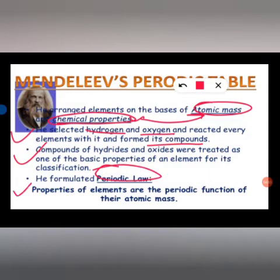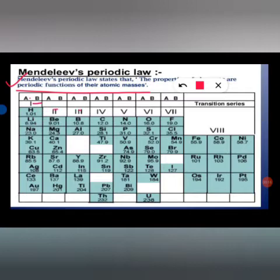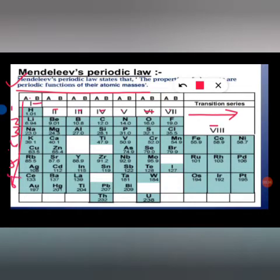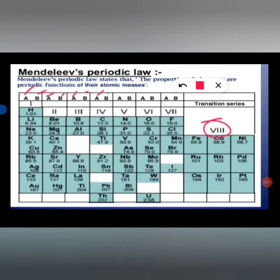Mendeleev formulated the periodic law: properties of elements are a periodic function of their atomic mass. His periodic table had eight groups (columns) and six periods (rows). He divided each group into A and B subparts — except Group 8, which had no A/B division. Groups 1 through 7 each had an A and B subgroup.